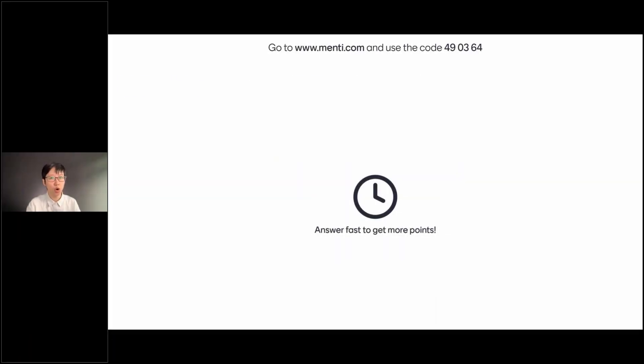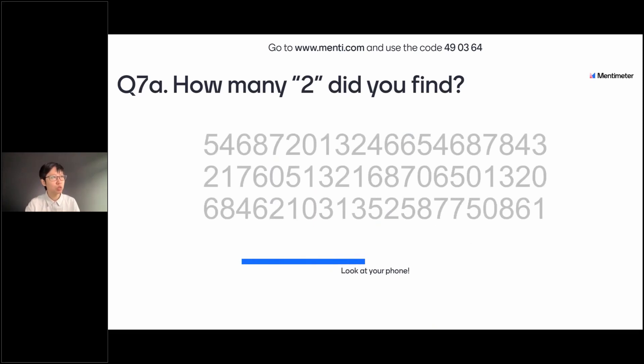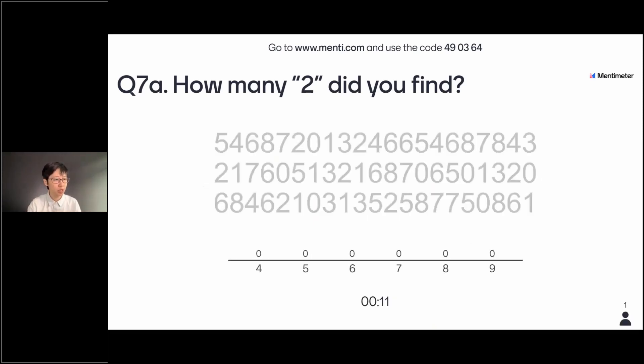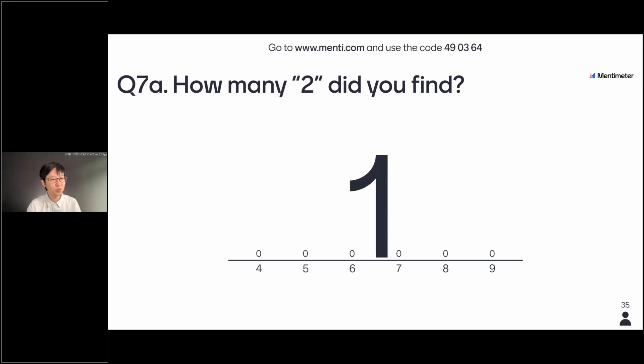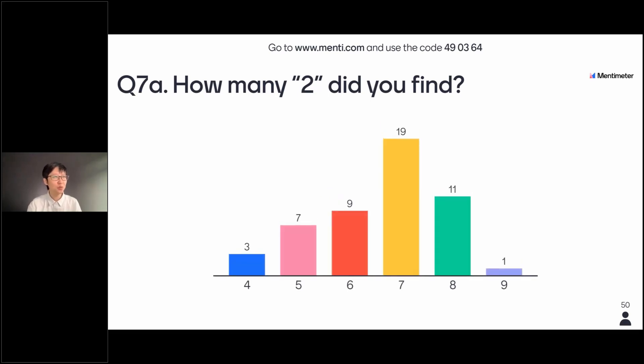Answer fast to get more points. How many number two can you find in this picture? And the timer is going right now. The timer is counting down. Seven, six, five, four, three, two, one, and time's up. Okay, and we have 19 people getting it right. How many number twos did you find? Okay, there were seven of them in a photo just now. And let's see who's the fastest fingers first.